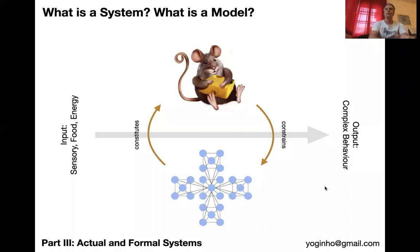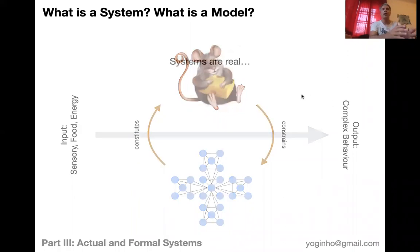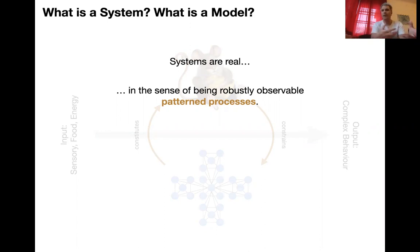Hi there and welcome back to Beyond Networks, the evolution of living systems. Last time we left off with the conclusion that systems are real in the sense of being robustly observable pattern processes. They're not just in our minds, but there's something graspable out there — a dynamic pattern.